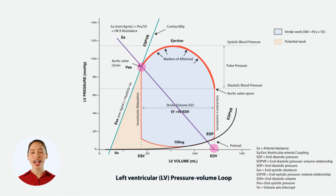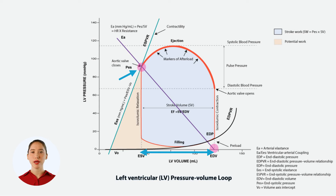The pressure here is the end systolic pressure, and the volume is the stroke volume, which is the difference between the end diastolic volume and the end systolic volume.